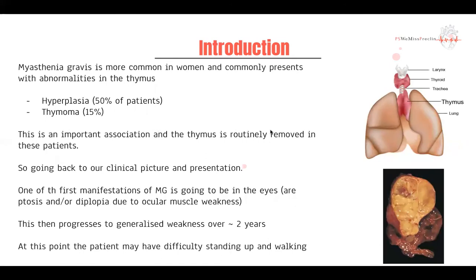Myasthenia gravis is more common in women, as with most autoimmune conditions. Interestingly, it quite commonly presents with abnormalities in the thymus gland. The thymus gland has a role in T-cell development, but the exact association between myasthenia gravis and the thymus isn't entirely understood. These abnormalities can either be a hyperplasia of the thymus, which is more common, or a solitary mass called a thymoma. Most patients with myasthenia gravis often undergo a thymectomy.